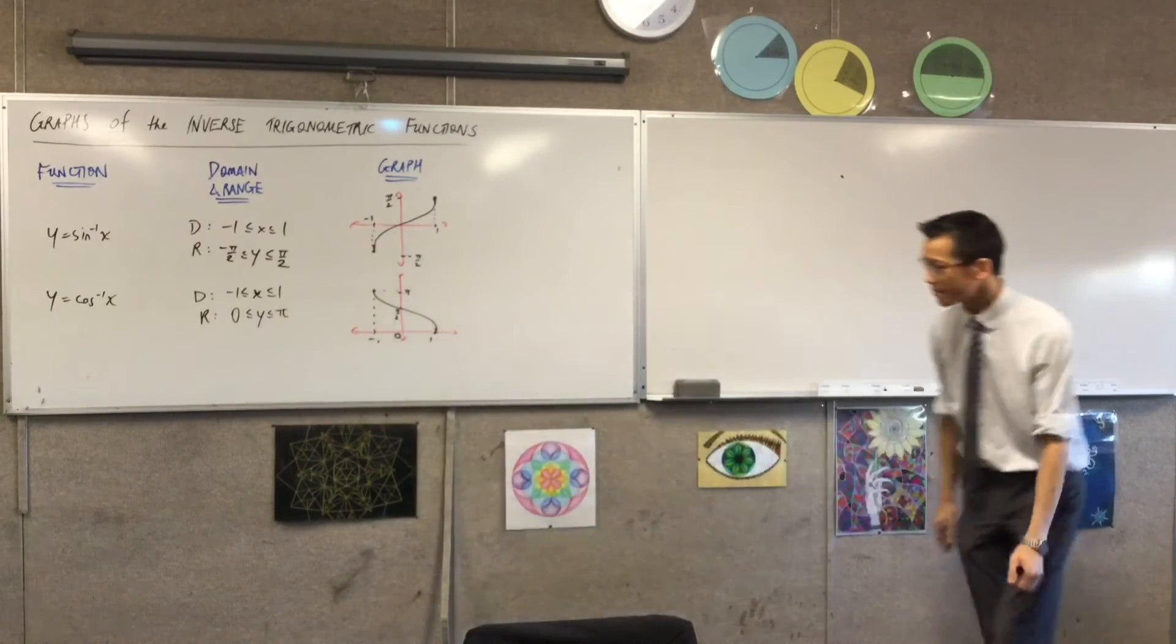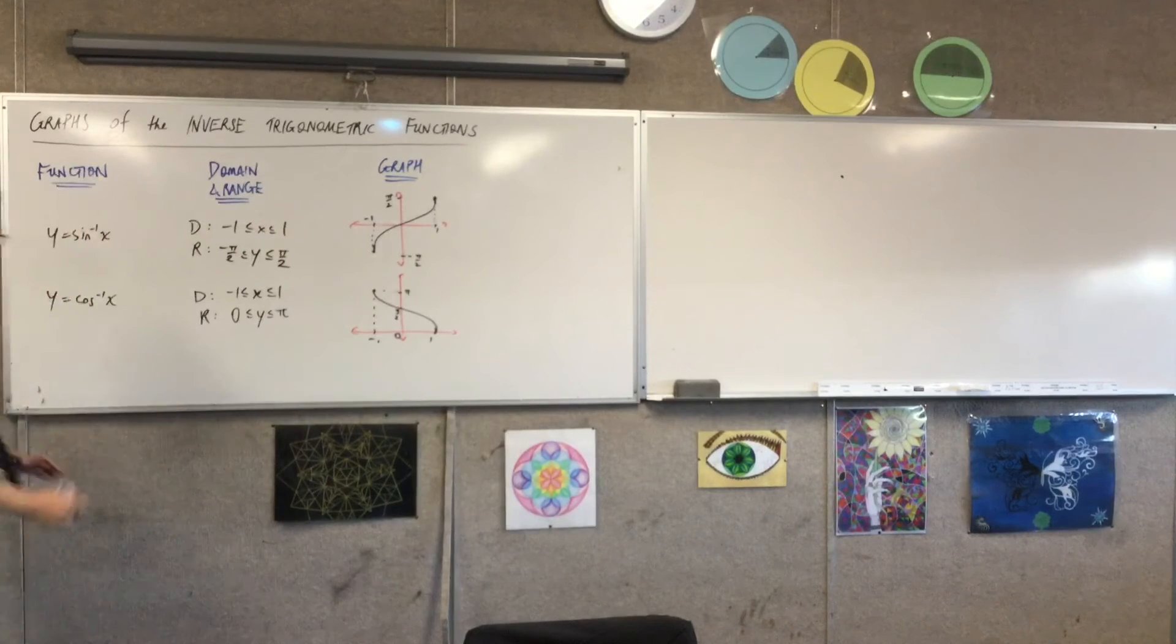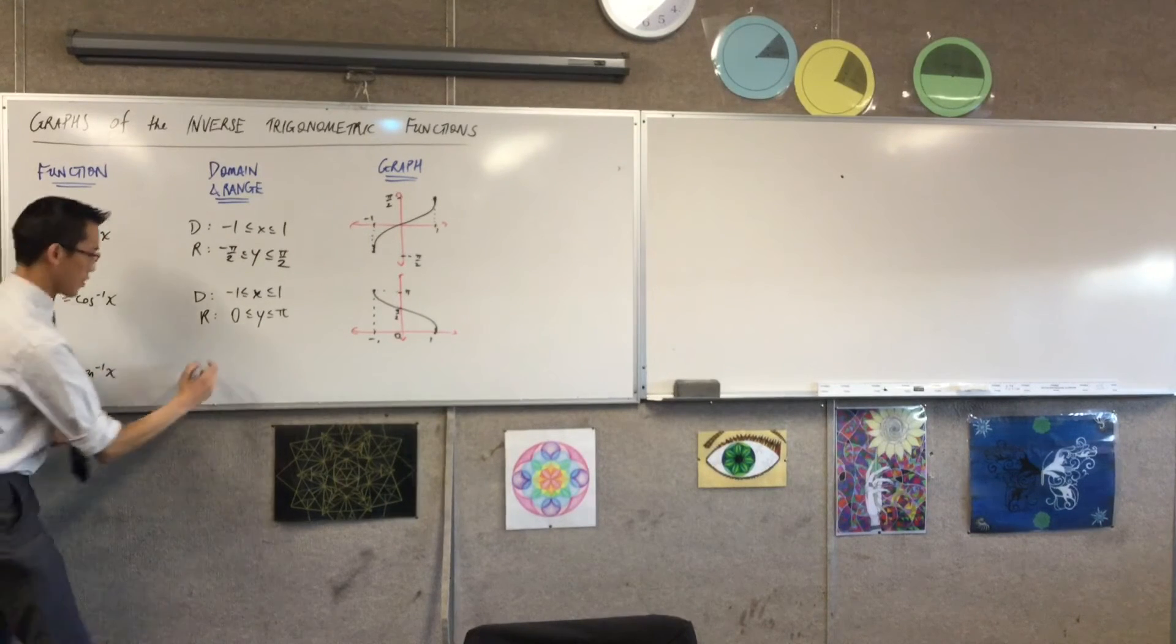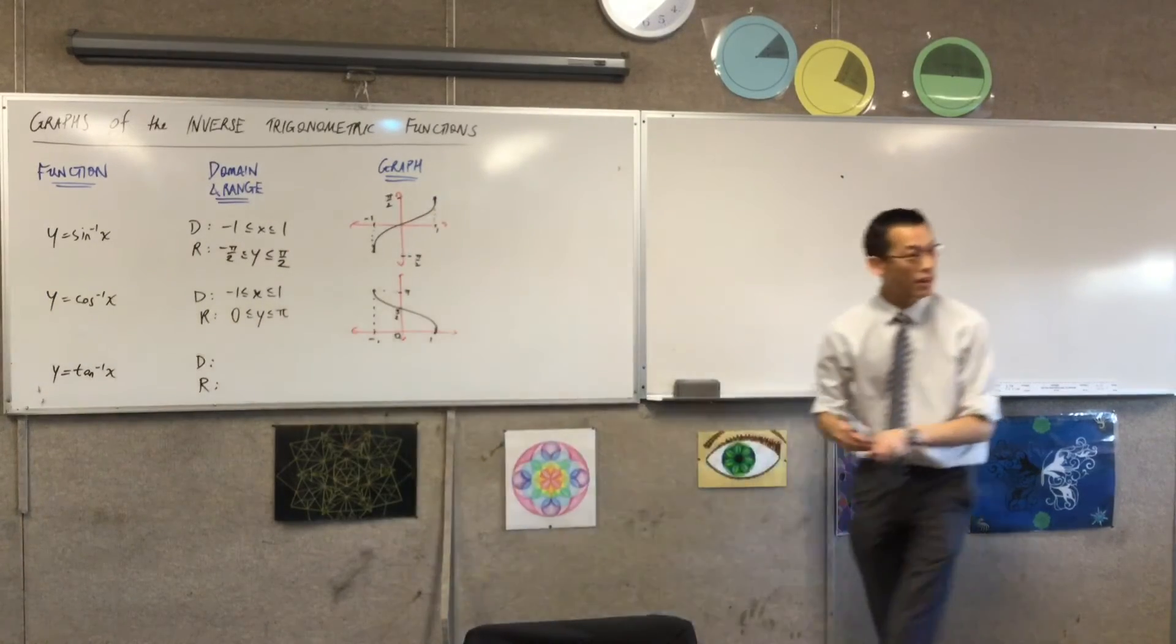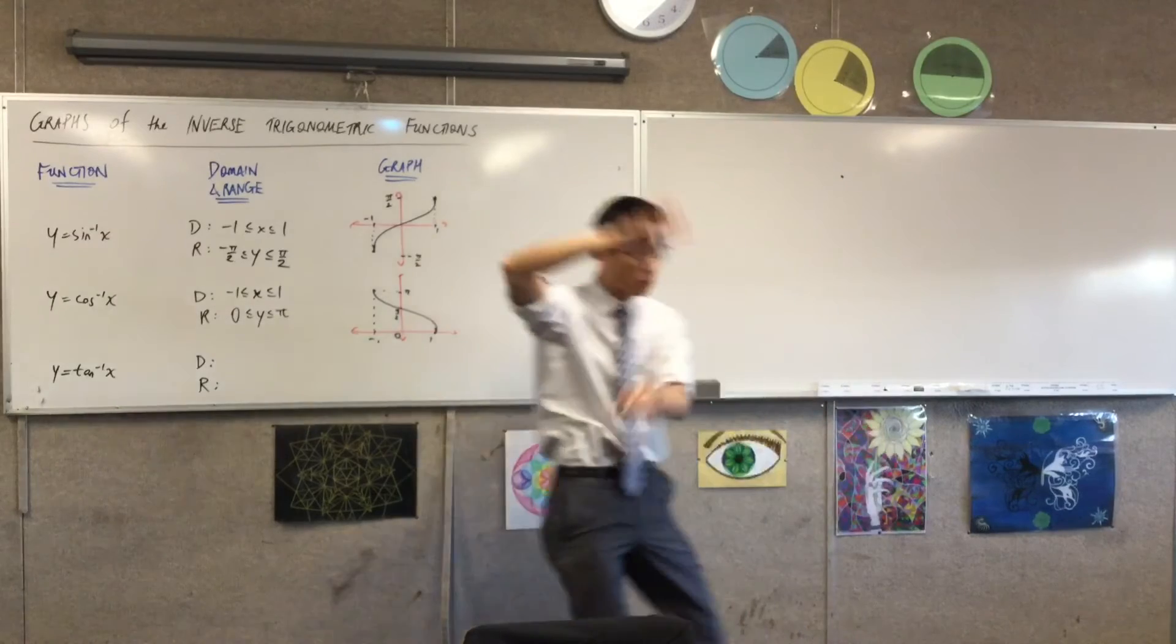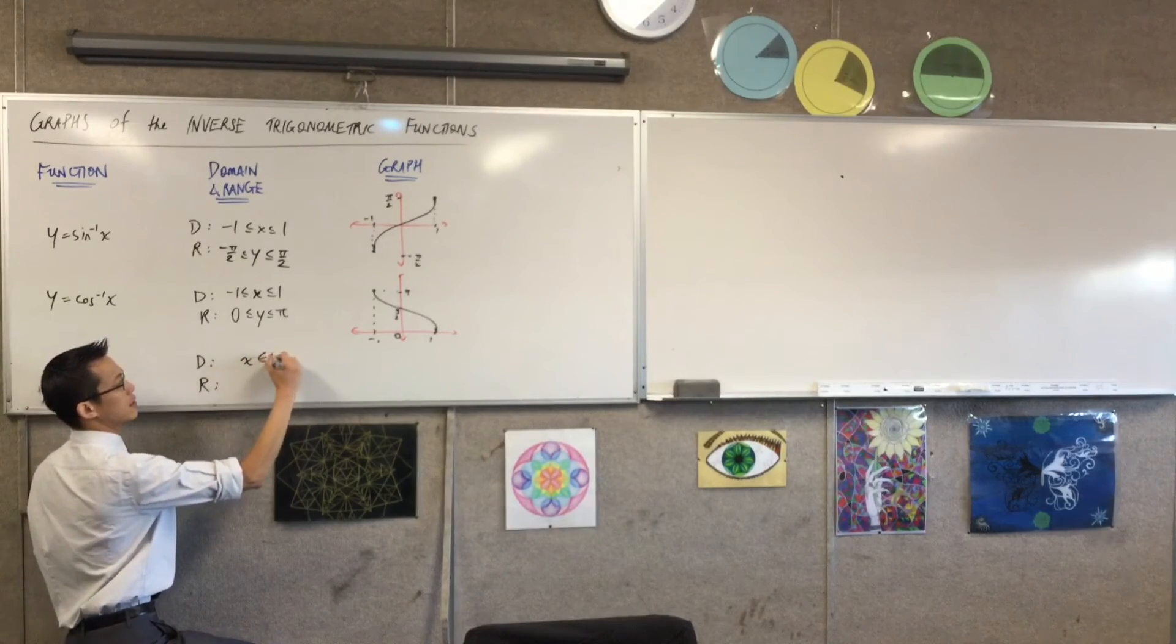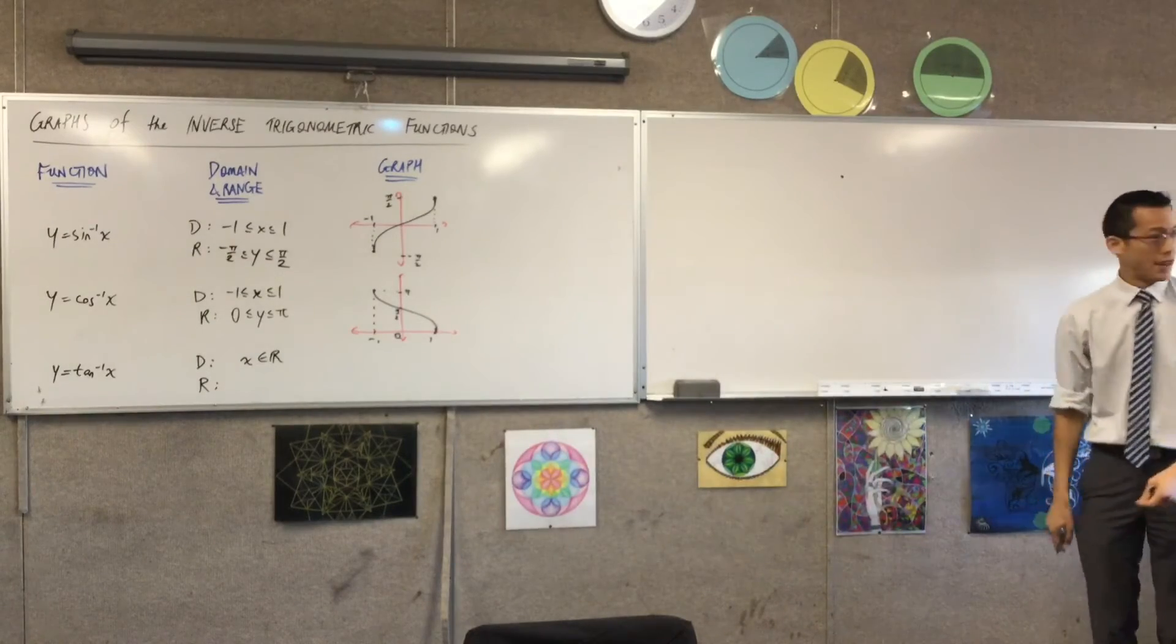Last one: y = tan⁻¹(x). Domain and range? The domain of tan⁻¹ comes from the range of tan. How far does tan go up and down? It goes all the way—we had all real values of y before, so now that we've swapped everything around, I'm going to have all real values of x.